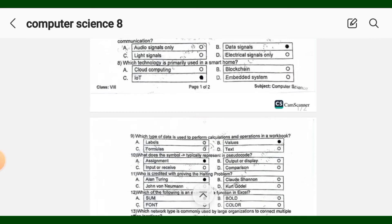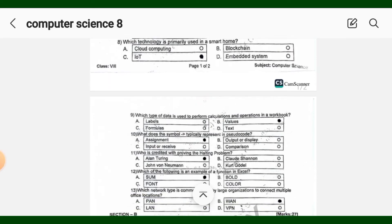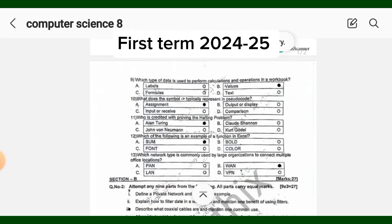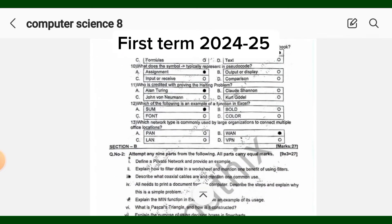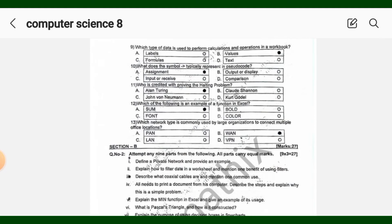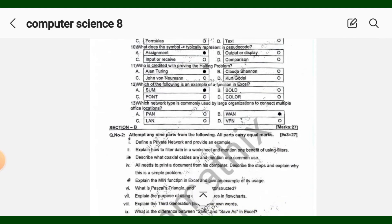MCQ 9, correct option is B. MCQ 10, correct option is A. MCQ 11, correct option is A. MCQ 12, correct option is A. MCQ 13, correct option is B.